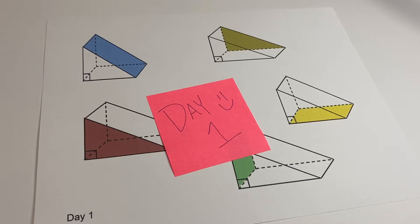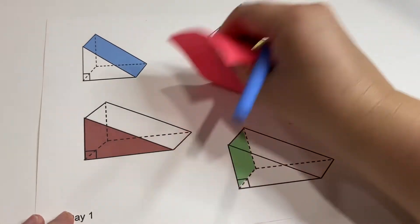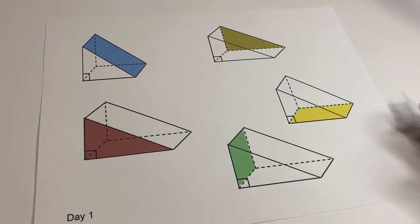Hi, and welcome to day one of finding the surface area of triangular prisms. Today we're going to talk about what is a triangular prism, trying to say that five times real fast, and just what we're going to call the different sides or faces.